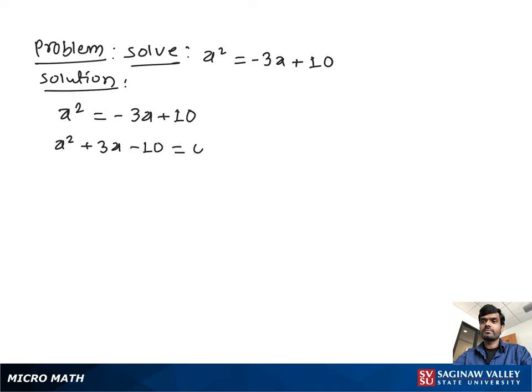Now find the factors of this quadratic equation. To find the factors, multiply the coefficient of a² (which is 1) and the constant -10. The factors of -10 are -1 and 10, or -2 and 5.